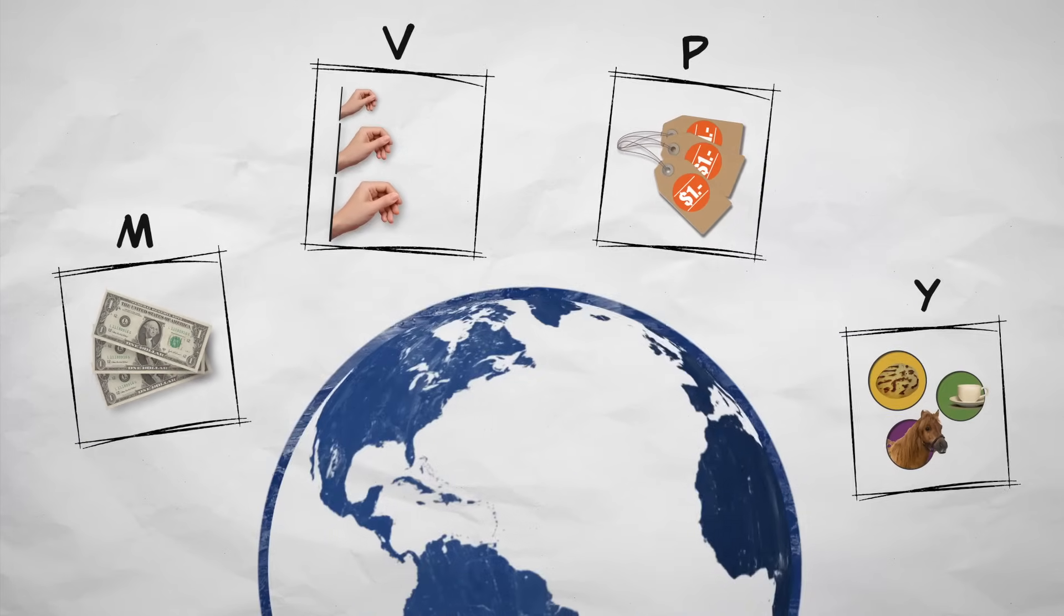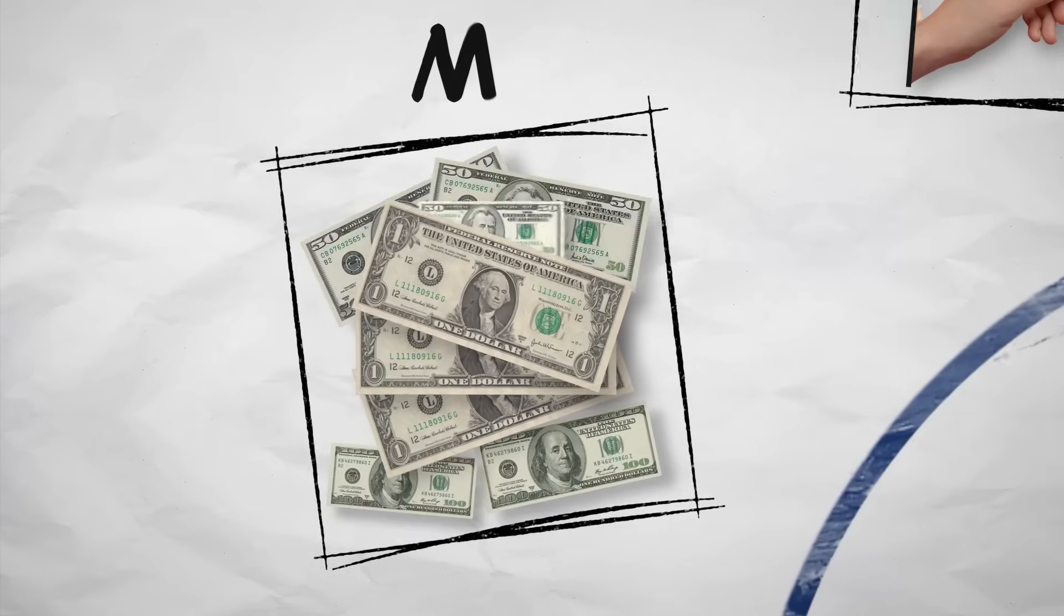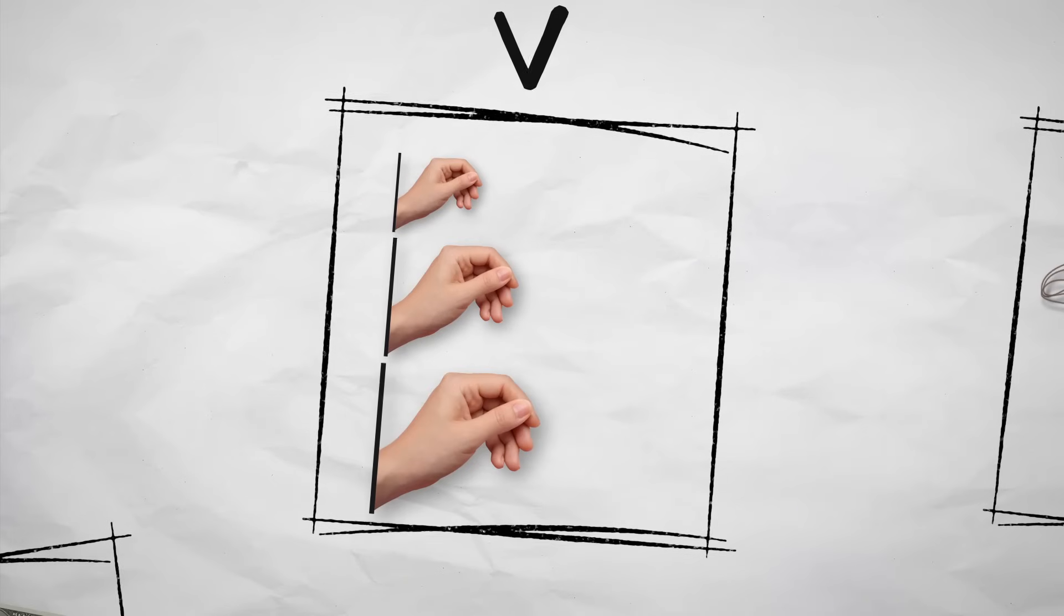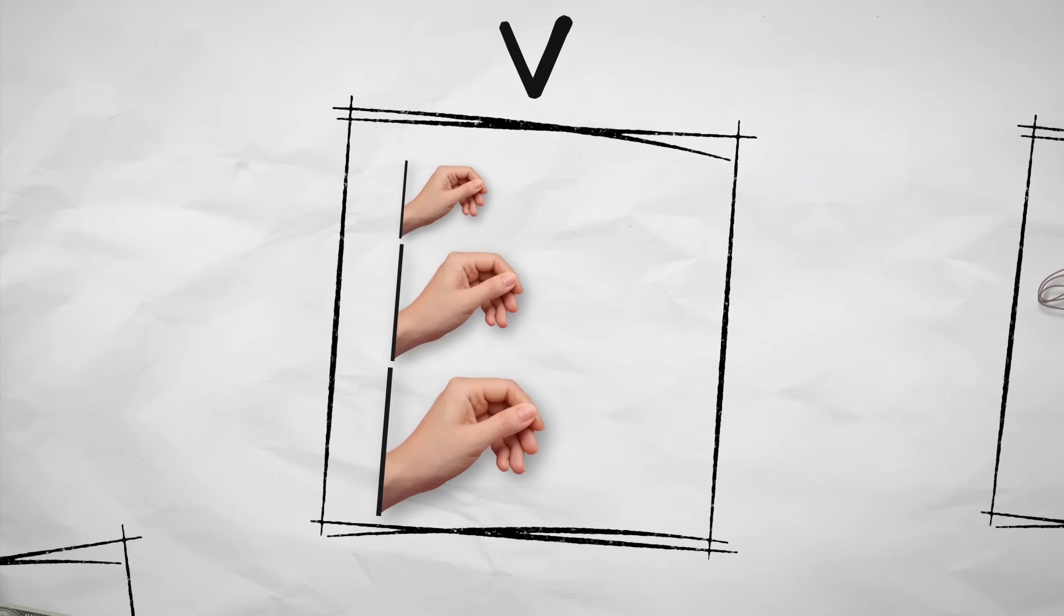Now, let's think about this for an economy as a whole. M would be the money supply, all the money in the economy. V would be how many times a dollar is spent purchasing finished goods and services.